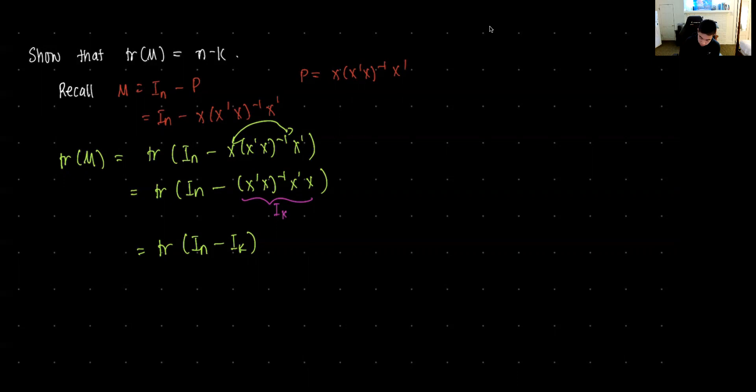Well, this matrix here has N rows, IN has N rows, and matrix IK has K rows. The operation in between is minus. So that proves that the trace of M is equal to N minus K.